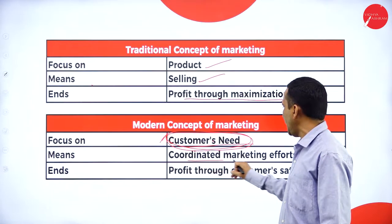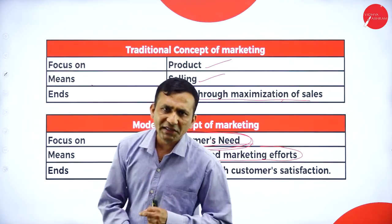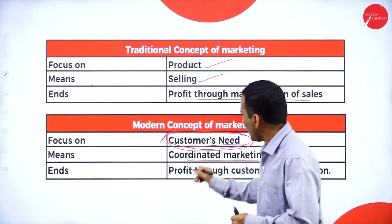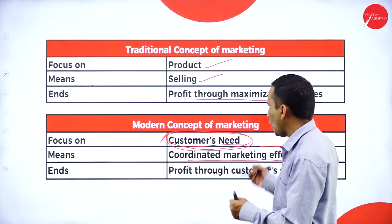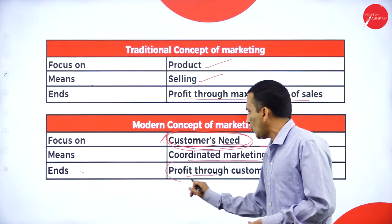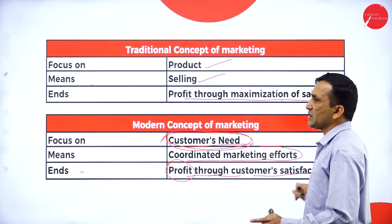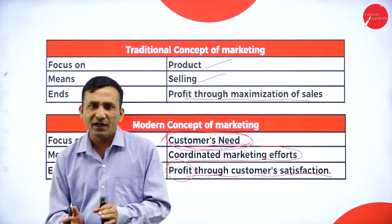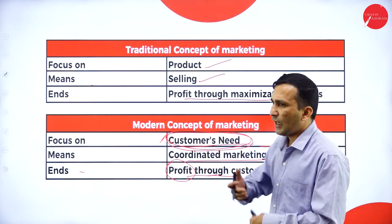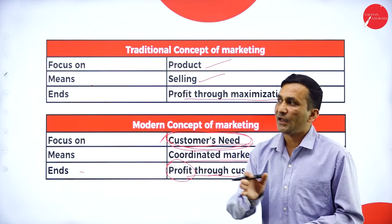Modern marketing means coordinating marketing effort. Unless we are coordinating with the buyers, we cannot sustain for a long period. Marketing effort will be coordinated, ending with profit through customer satisfaction. Any business starts with the motto of maximizing profit, but in modern marketing, profit comes through customer satisfaction — if customers are satisfied, they will purchase again and again.